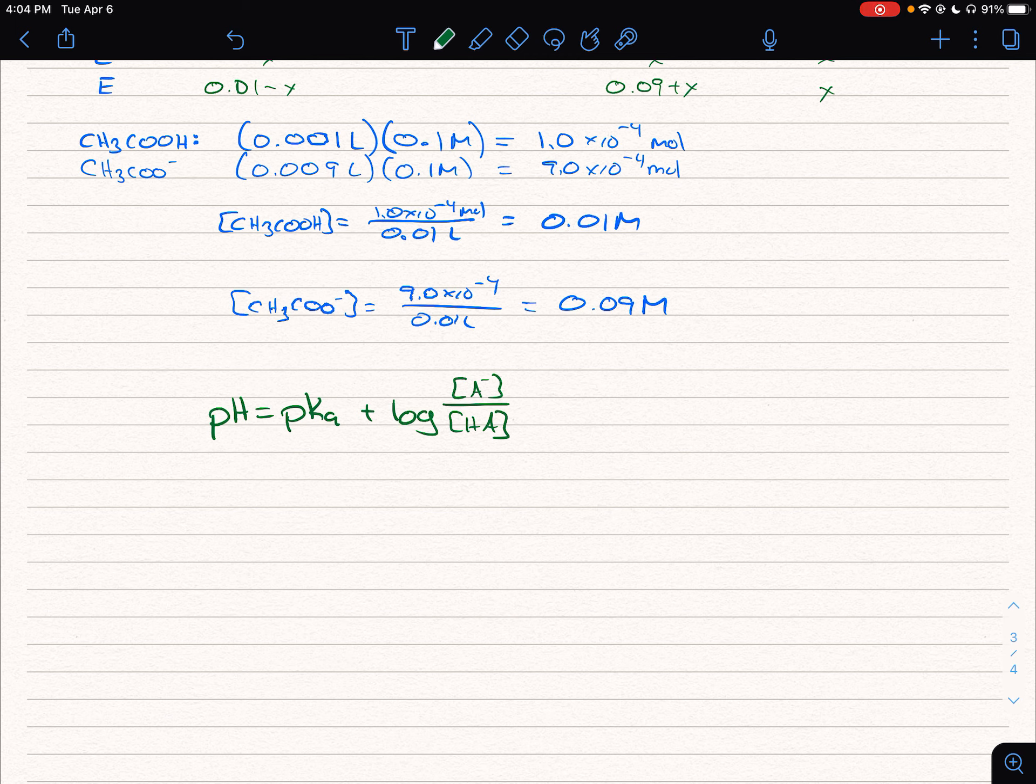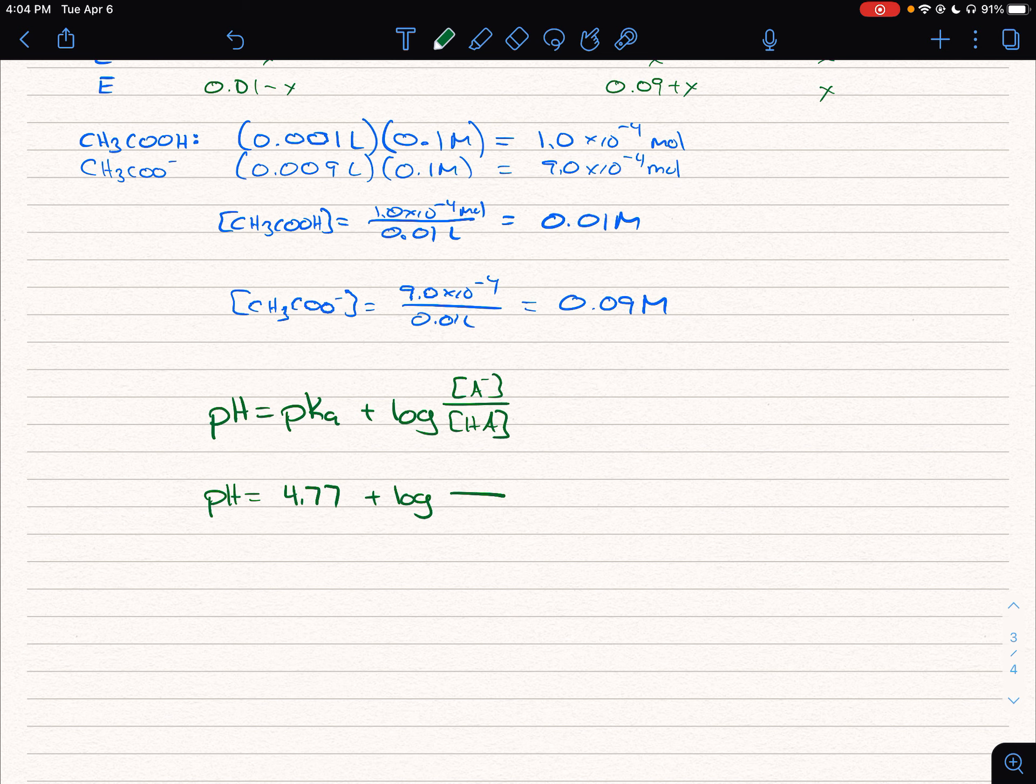And if we go ahead and do this, this becomes a much simpler calculation because we can say the pH is equal to the pKa. We can look up the pKa of acetic acid, or we can look up the Ka and then convert it to pKa. And so that's 4.77. That's a constant plus the log. And now we can see all we have to do is take our concentrations. So our weak base, 0.09, and our weak acid, 0.01. And now we can see it's a much simpler calculation. So the pH is going to end up being 5.72.